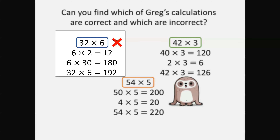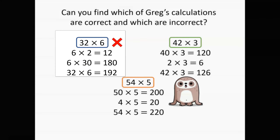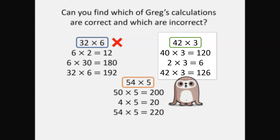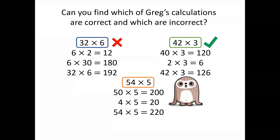Now it's fixed. In our second example, Greg is correct. He has partitioned forty-two into forty and two, and all of his other calculations are correct there. Well done, Greg.